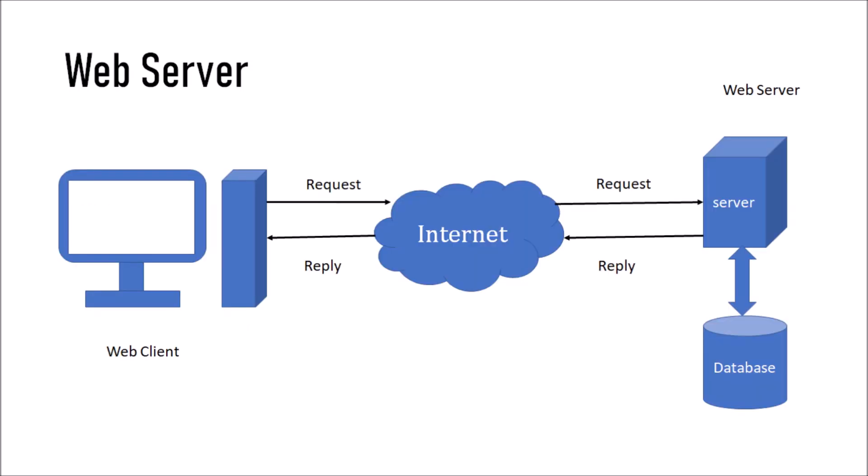Here is how a web server works. If this is a web client, it will request something through the internet. This request passes to the server, which has a database. Based on the request, the server processes it using the database and replies to the web client through the internet. The client asks for something — it is a request — and based on the request, the server replies and the web client gets the reply. Client means asking for something; server means giving or serving something.